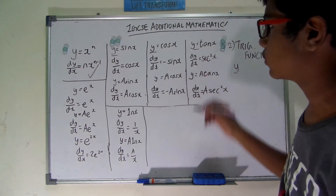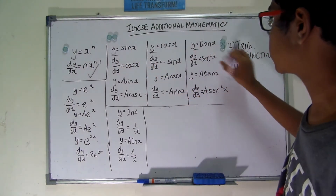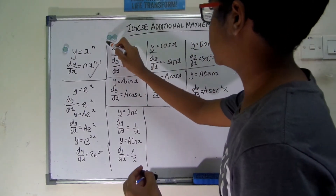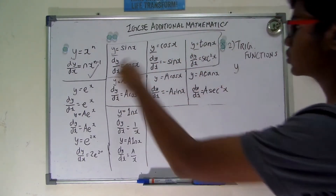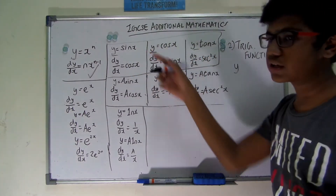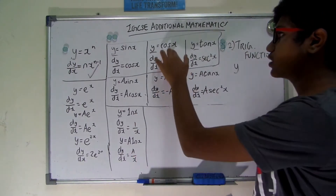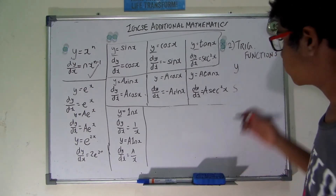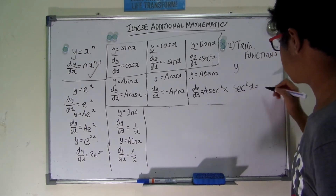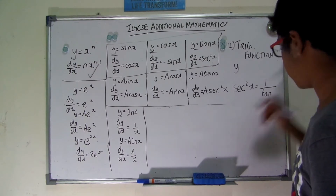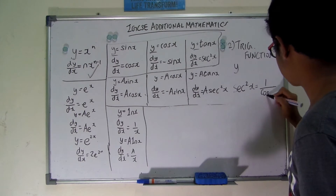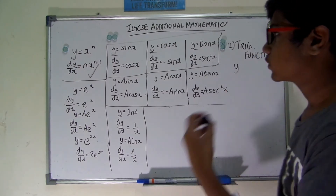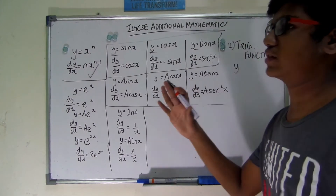These derivatives must be memorized. When y equals sin x, dy/dx equals cos x. When y equals cos x, dy/dx equals negative sin x. When y equals tan x, dy/dx equals sec²x — where sec²x means 1 over cos²x. This comes from the trigonometry chapter and must be well known.